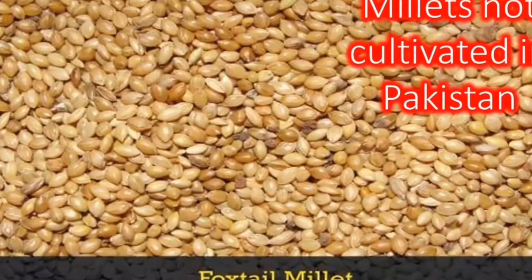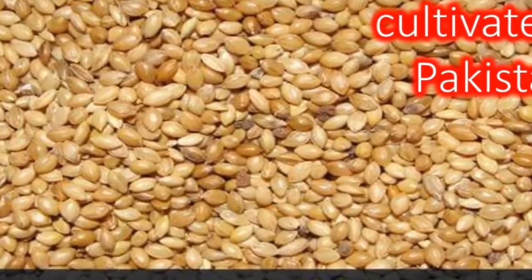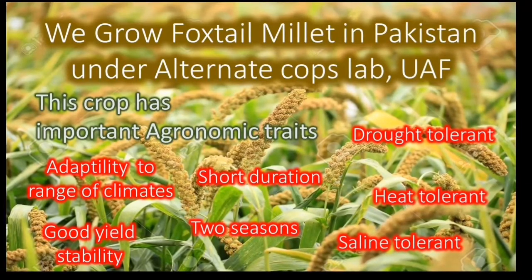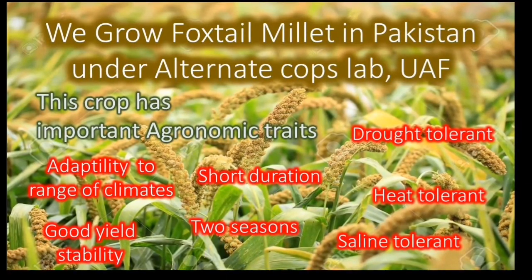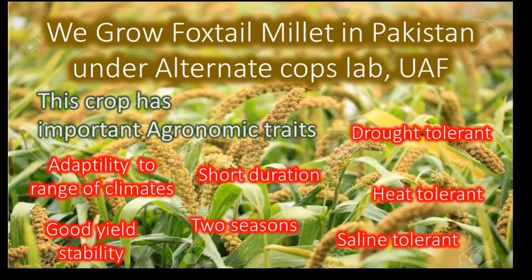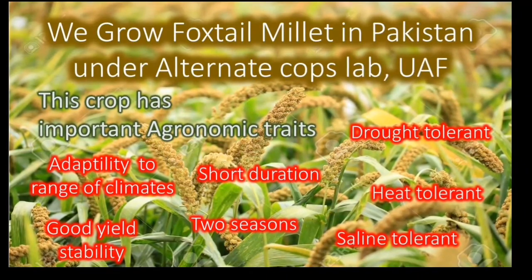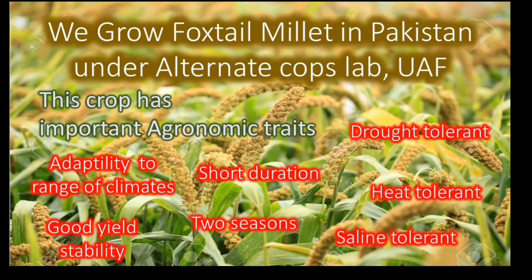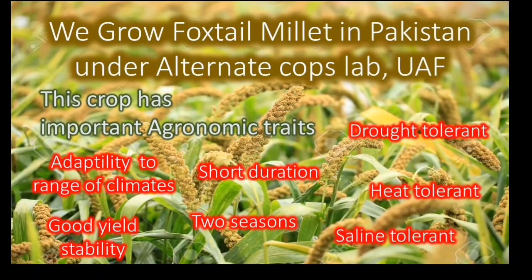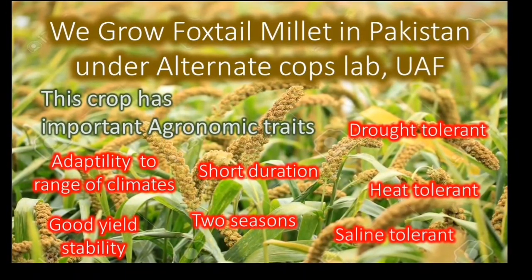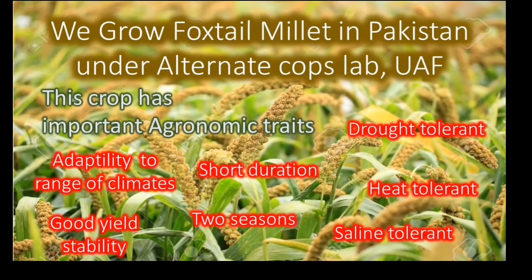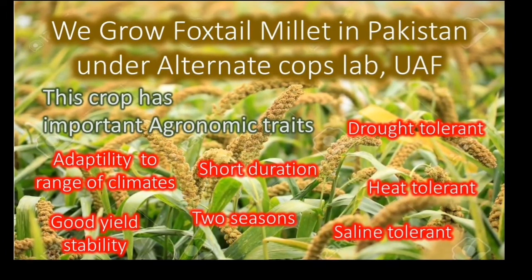Let's grow foxtail millet in Pakistan. This crop has important agronomic traits, studied under the alternative crops lab at UAF. The crop is drought tolerant, heat tolerant, saline tolerant, short duration, can be grown in two seasons — spring and kharif — has adaptability to a range of climates, good yield, and stability.